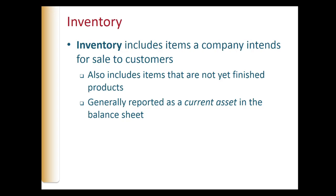You're familiar with several types of inventory: clothes at The Limited, shoes at Payless Shoe Store, grocery items at Publix Supermarkets, digital equipment at Best Buy, building supplies at The Home Depot, and on and on. Inventory also includes items that are not yet finished products.